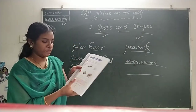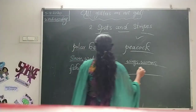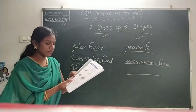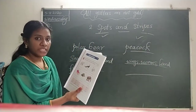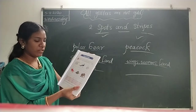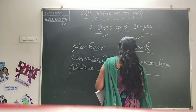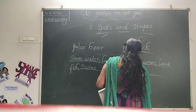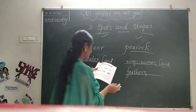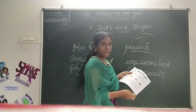Does it live in water? No. Does it have a shell? No. Does it live on land? Yes — land. Can it eat grass? No. Can it eat fish? Yes, sometimes. Can it fly? No. Does it have fins? No. Does it have feathers? Yes. Does it eat insects? Yes. Does it have a beak? Yes.